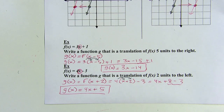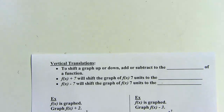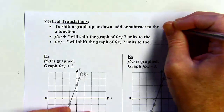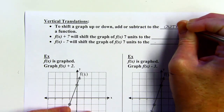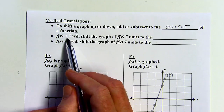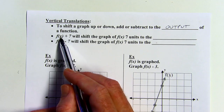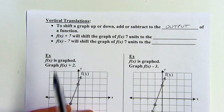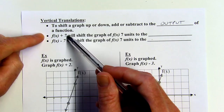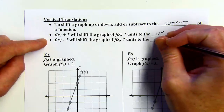That's horizontal translations. Now let's take a look at vertical translations. To shift the graph up or down, we're going to add or subtract to the output of the function — meaning we're not adding inside the parentheses; we're adding to the whole function. f of x is the output; x is the input. This one works the way you'd expect: if you're adding, you go up; if you're subtracting, it shifts down.